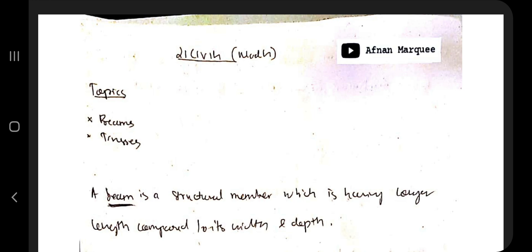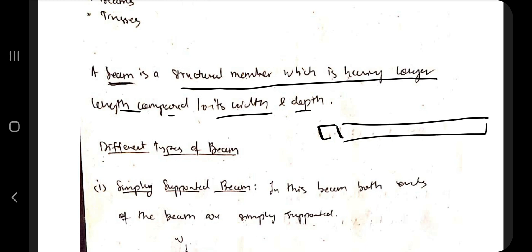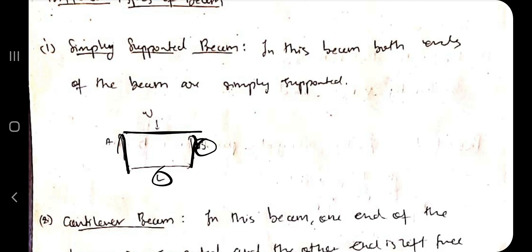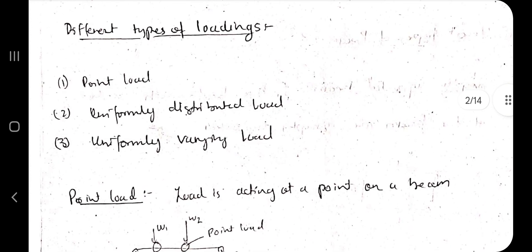Let's get started with the first one: beams. A beam is a structural member which has a longer length compared to its width and depth. There are different types of beams. In a simply supported beam, both ends of the beam are simply supported, with length L supported by forces at A and B. In a cantilever beam, one end is free and the other is attached to a wall. In an overhanging beam, only part of the beam is supported and the other part is hanging free.